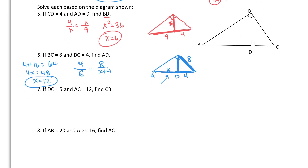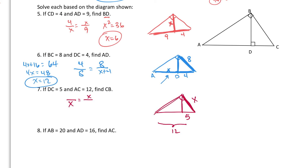Next problem: DC is 5 and AC, the whole hypotenuse, is 12. We need to find CB. Redrawing the triangle with the altitude dropped, X — which is leg CB — is the geometric mean of the piece next to it, 5, and the whole hypotenuse, 12. So X squared equals 60. X equals the square root of 60, which breaks down into 4 times 15, giving us 2 root 15.